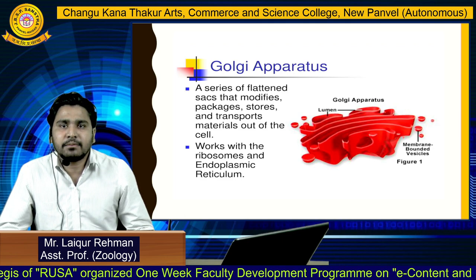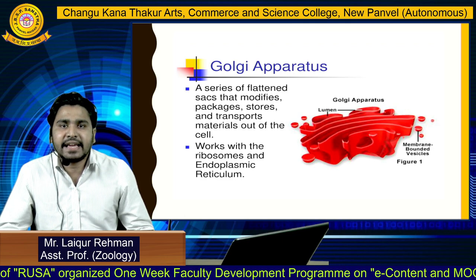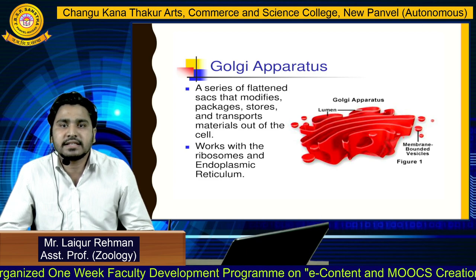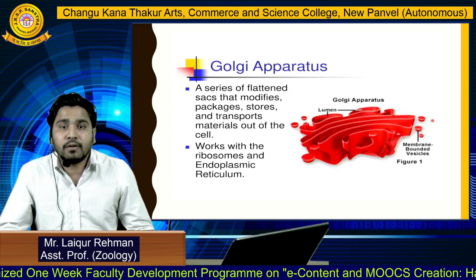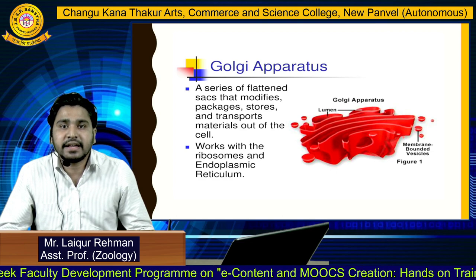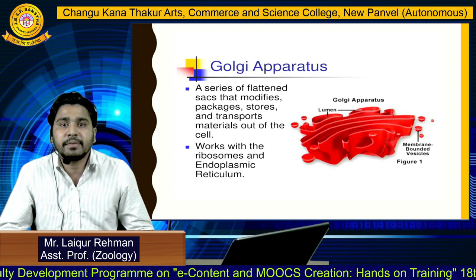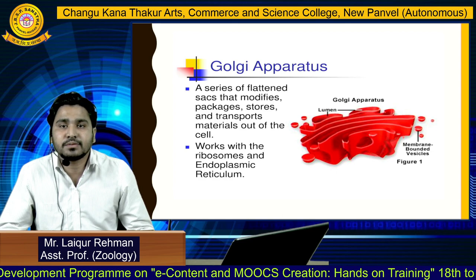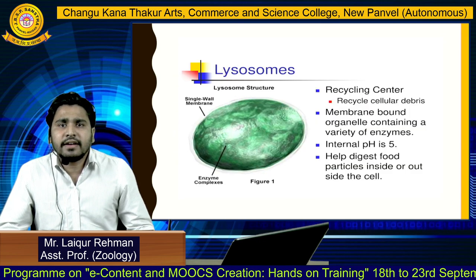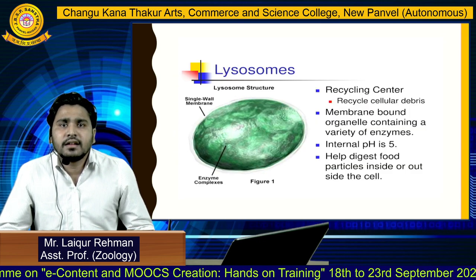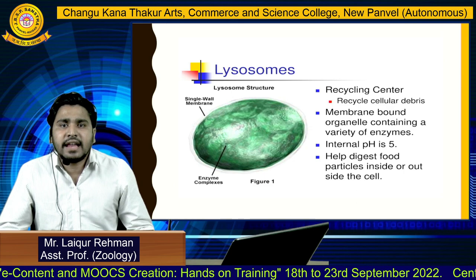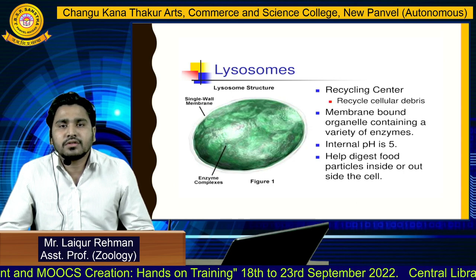Next is the Golgi apparatus. It is basically a series of flattened sacs that modifies, packages, stores, and transfers material out of the cell. It works together with ribosomes and the endoplasmic reticulum, and these three together make up our transport system.